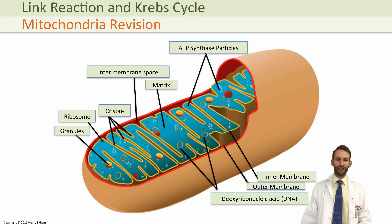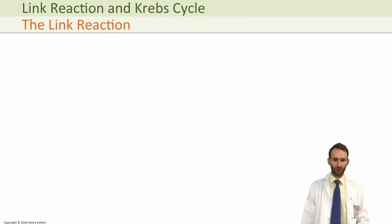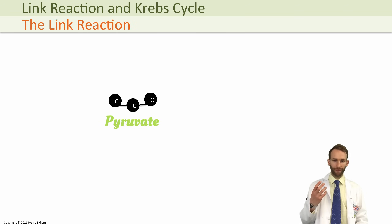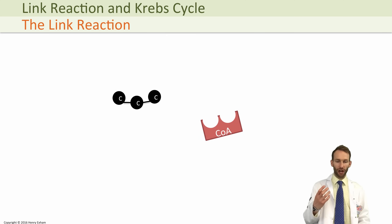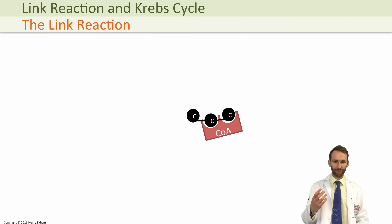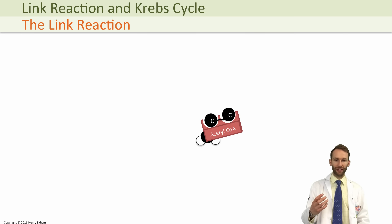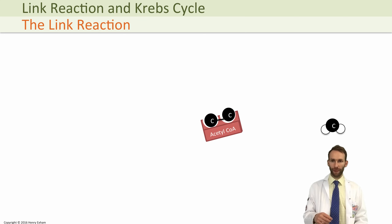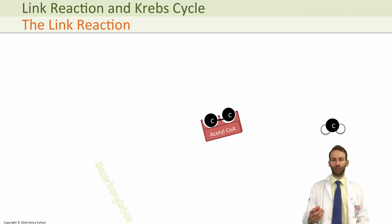If we take these two pyruvate molecules — here's one shown on the screen — what happens is it binds to a coenzyme molecule called coenzyme A, and it forms a new molecule called 2C acetyl coenzyme A. As it does that, it will release carbon dioxide. Because it releases carbon dioxide, this is called a decarboxylation reaction.